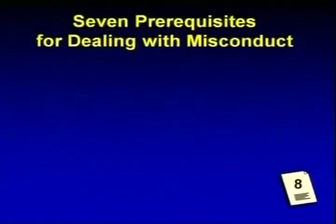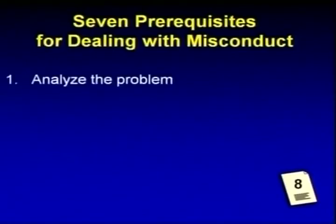There are seven prerequisites that you need to look at in the process for dealing with misconduct. Think of it as your to-do list. The first thing you're going to do is analyze the issue and the problem. And once you determine that it is indeed a conduct problem, then you need to investigate.